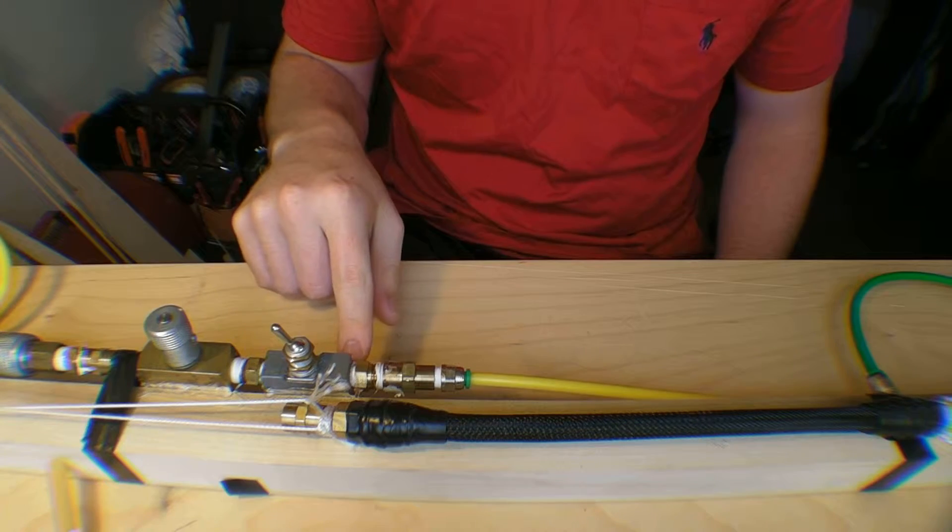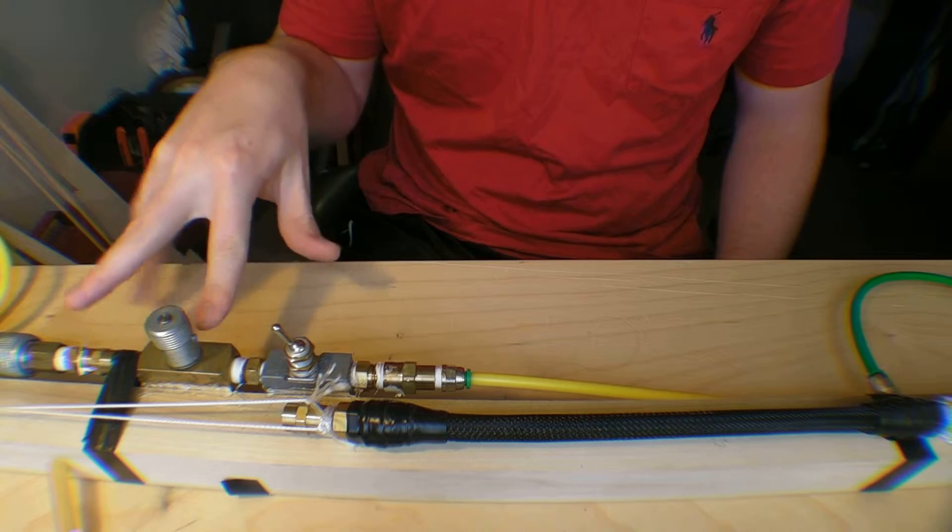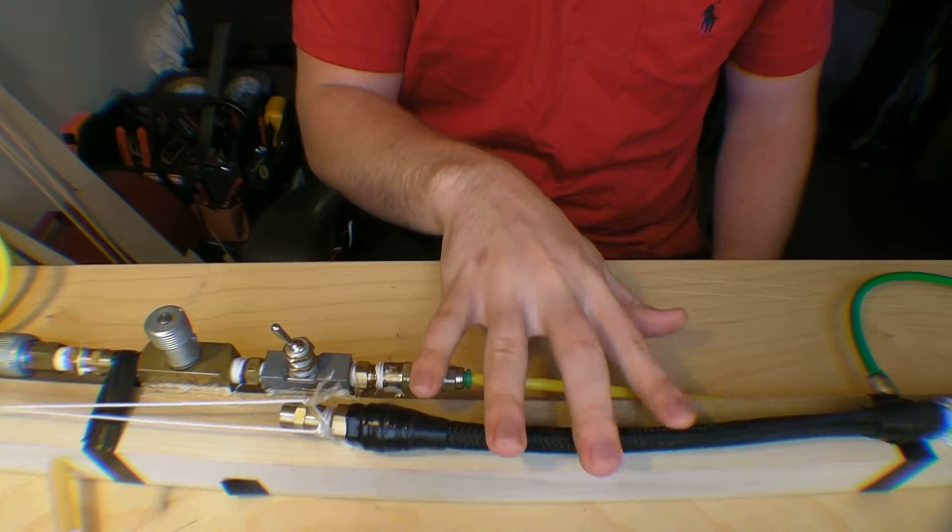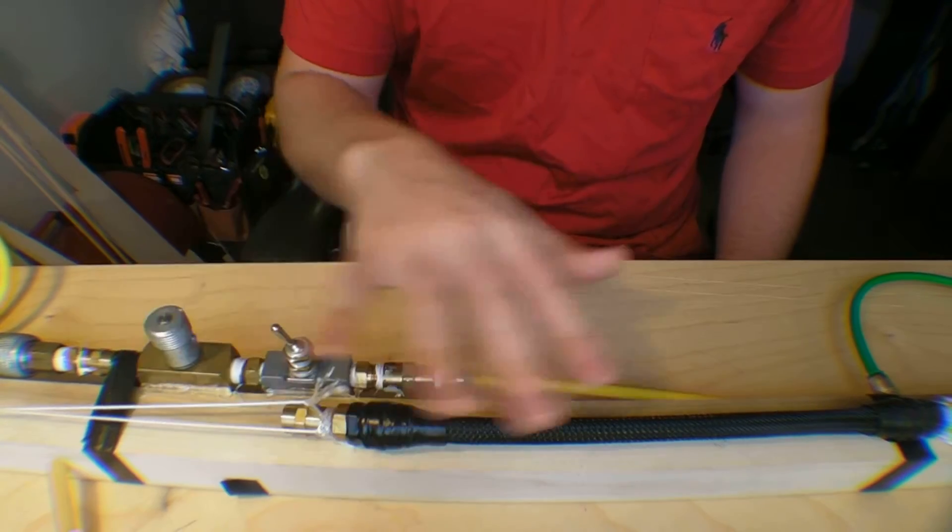And then of course I have a pneumatic switch here. It's actually a three-way. So it lets pressure on one side through, and then when you deactivate it, it blows all the pressure from this side out. So it activates and then the pressure rises.